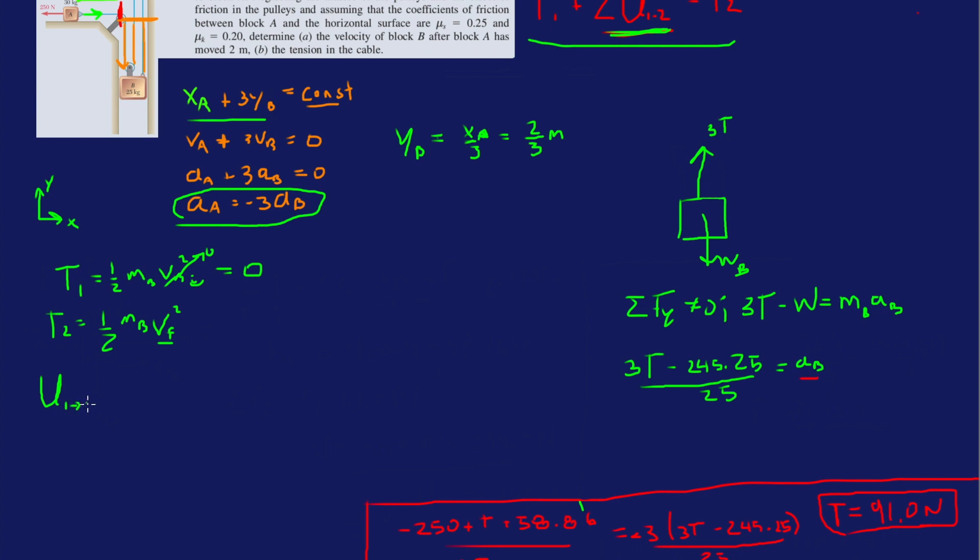Alright, so now let's look at this middle term over here, the networks, or I guess all the terms contributing to the network. So from this book, we know there's a change in elevation. So if there's a change in elevation, there's a gravitational potential associated with it. There's the minus W delta Y. So it's going to be, what's the weight of B? 25 times 9.81. So it's 245.25, times the change in height.